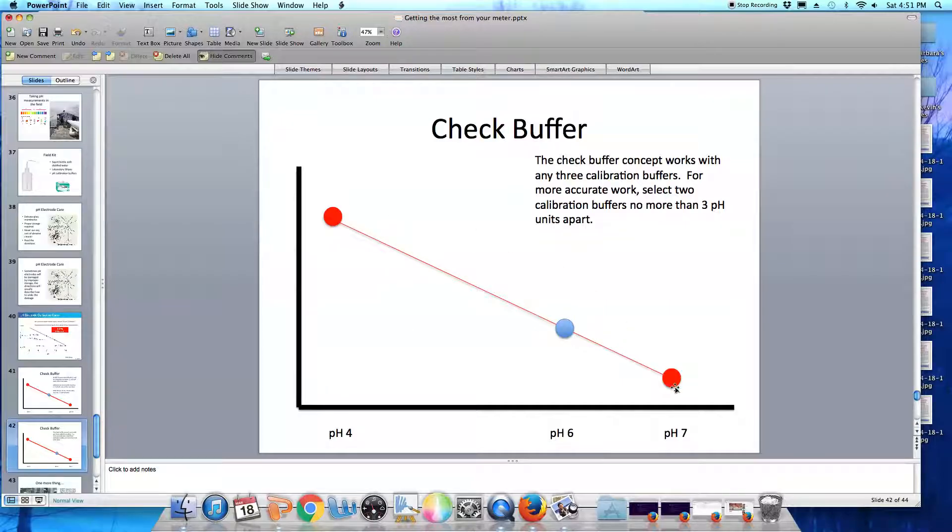In this example, we calibrated at pH 4 and at pH 7 with our check buffer, which is read as if it were a sample, at pH 6. If you check the New Jersey Administrative Code, it will describe some situations where your pH probes must be calibrated with two buffers no more than 3 pH units apart. The important thing to remember is that the fewer pH units between your calibration buffers, the more accurate your pH readings are going to be.